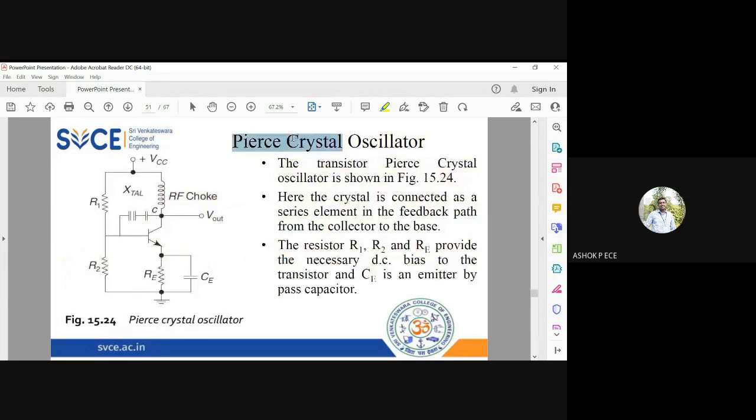So next one is Pierce crystal oscillator. The circuit diagram is shown here. The crystal is connected in the feedback path between base and collector. You should remember the circuit as a collector to base feedback biasing circuit, with the crystal connected in the feedback path between base and collector.